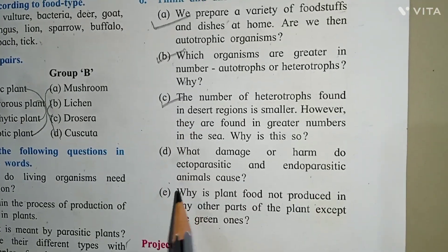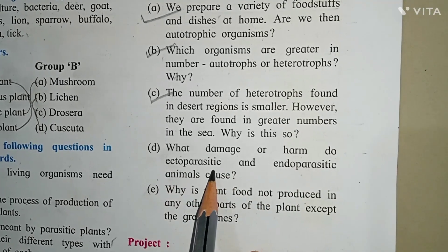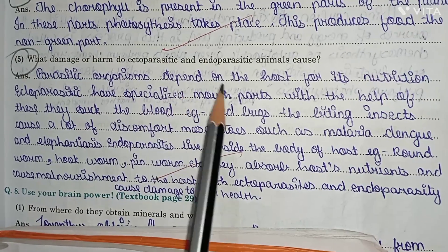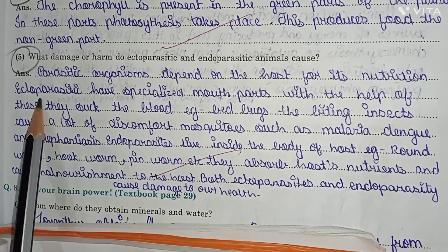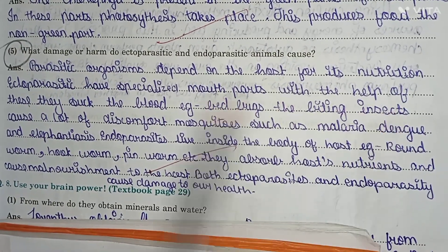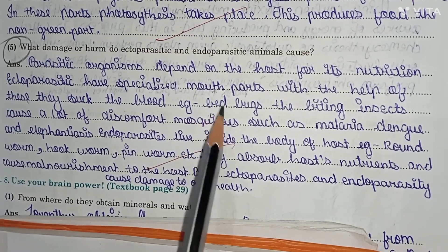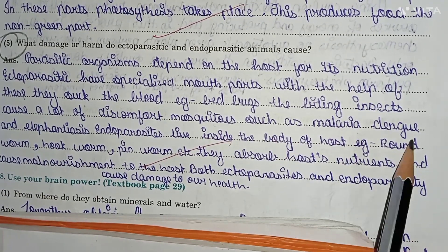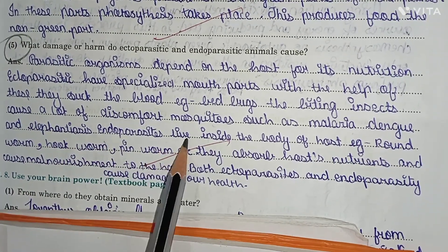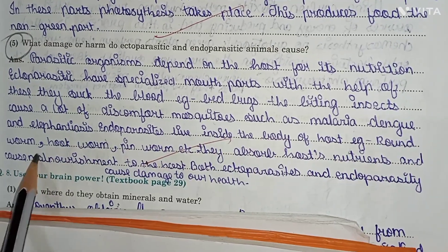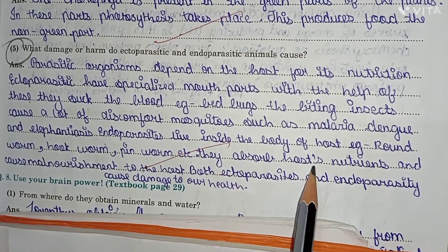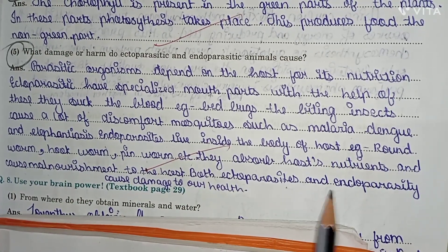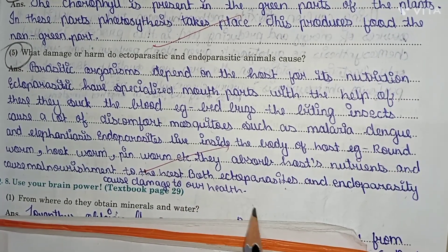Question number four: what damage or harm do ectoparasitic and endoparasitic animals cause? Parasitic organisms depend on the host for nutrition. Ectoparasites have specialized mouth parts with which they suck blood — examples are lice and bugs, which cause discomfort. Mosquitoes cause diseases such as malaria, dengue, and elephantiasis. Endoparasites live inside the body of the host — examples include roundworm, hookworm, and pinworm. They absorb the host's nutrition and cause malnourishment. Both ectoparasites and endoparasites cause damage to our health.